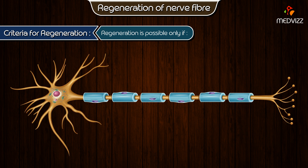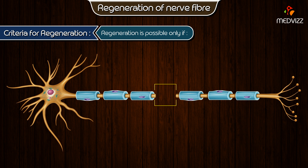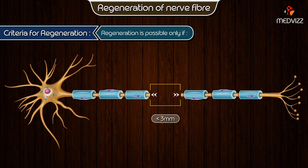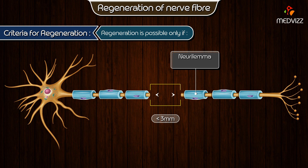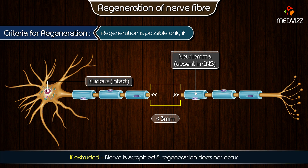Criteria for regeneration: regeneration is possible only if certain criteria are fulfilled by the degenerated nerve fiber. First, the gap between the cut ends of the nerve should not exceed three millimeters. Second, neurolemma should be present. As neurolemma is absent in the CNS, regeneration of nerve does not occur in the CNS.